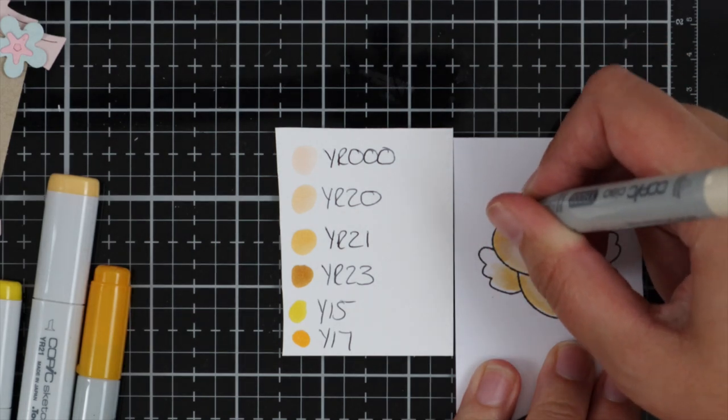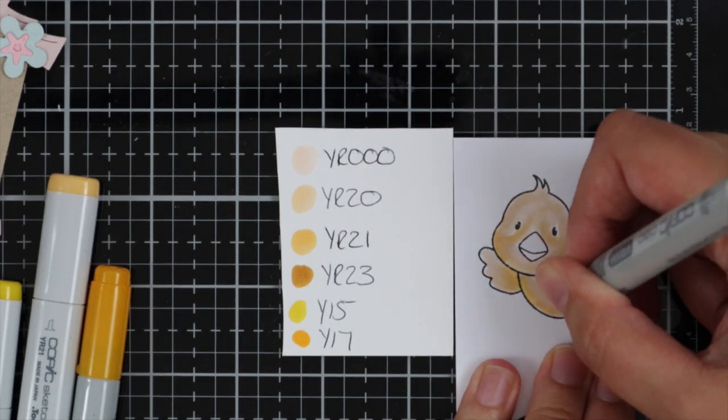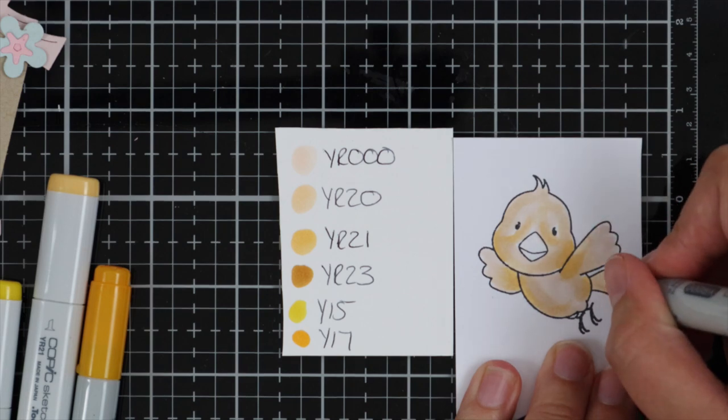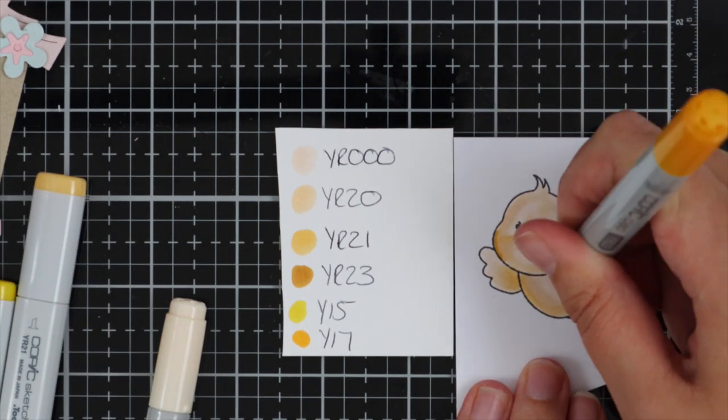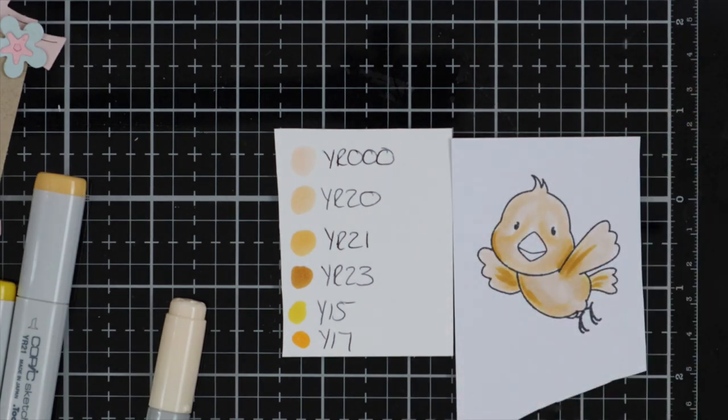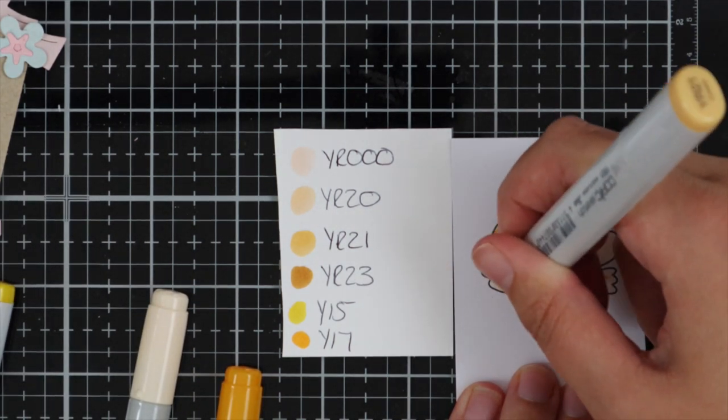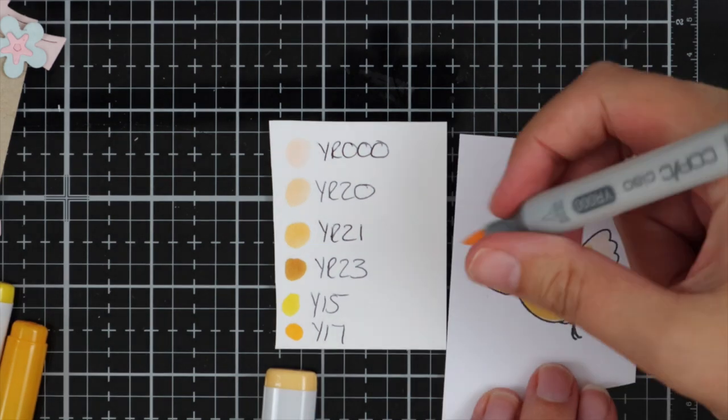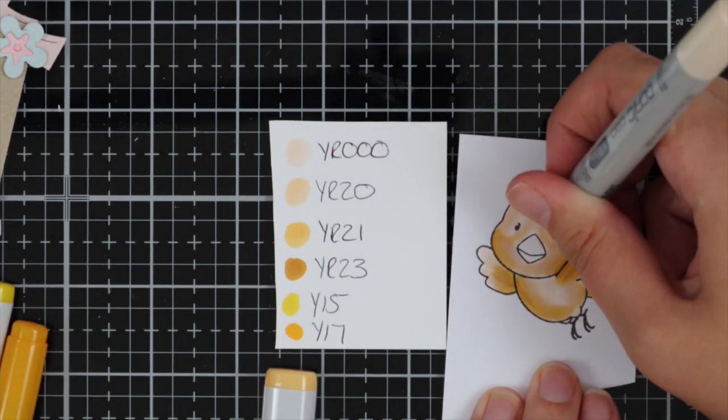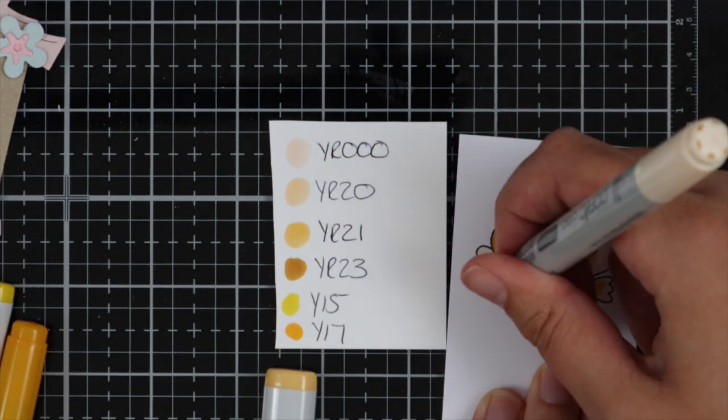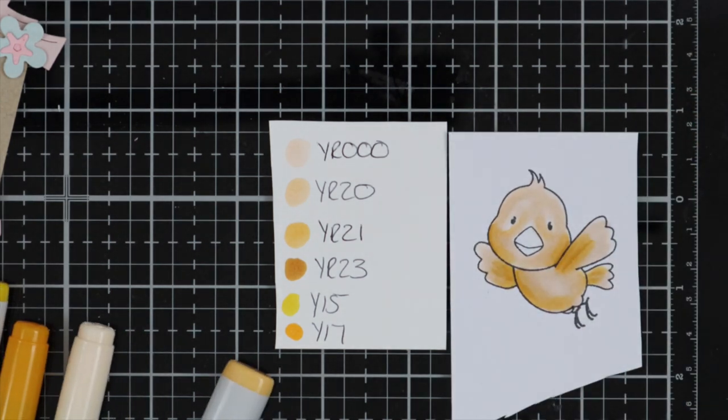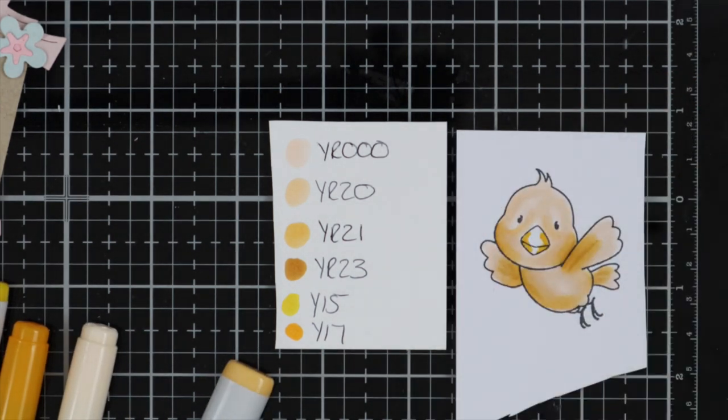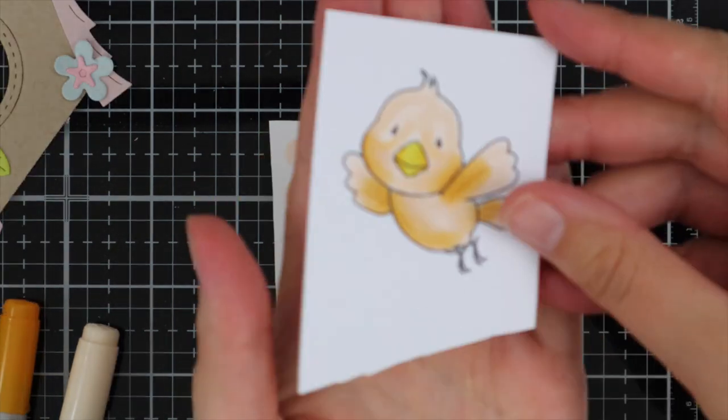I start with my darkest marker for shading, then my middle marker to blend that out, and then the lightest color which goes all over the image. I went over the shading twice to bring out the shading a little bit more.